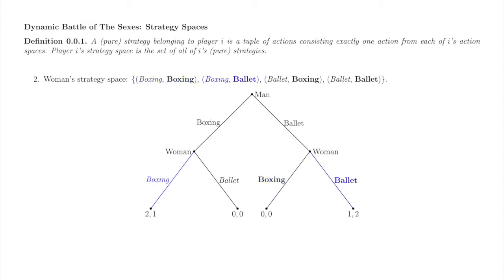Here is her strategy italic boxing, bold ballet. We might informally refer to this strategy as 'follow the man.' Here is her strategy italic ballet, bold boxing. We might informally refer to this strategy as 'avoid the man.' Finally, here is her strategy italic ballet, bold ballet. We might informally refer to this strategy as 'ballet no matter what.'